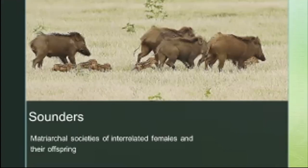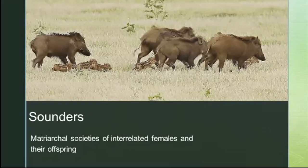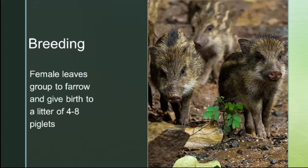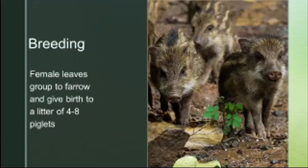They're social animals and live in matriarchal family groups called sounders, which consist of interrelated females and their offspring from previous seasons. Adult males tend to live solitary lives and only join the sounders during the breeding season. The gestation period for females is about 115 days; they leave the group to build a nest or den, give birth to a litter of four to eight piglets, and when the piglets are four or five days old she takes them back to rejoin the sounder group.